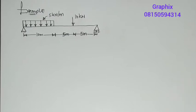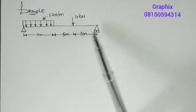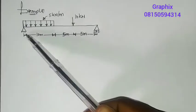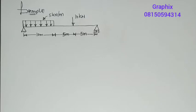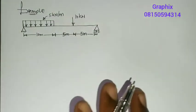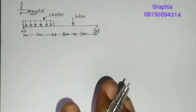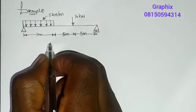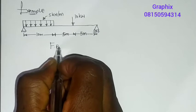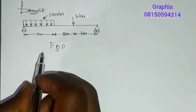We want to calculate for the reaction, which is due to a support. To see how the support is reacting to the load, we need to draw it in our free body diagram. The free body diagram is a diagram that shows all the external forces acting on the system.